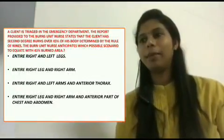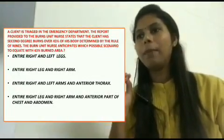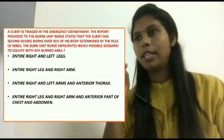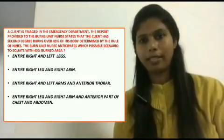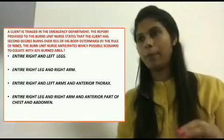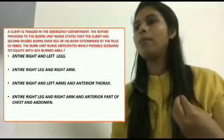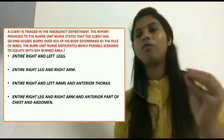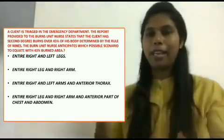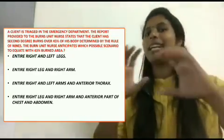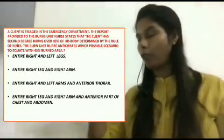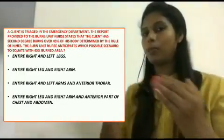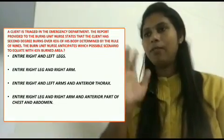Now let's see one more question. A client is triaged in the emergency department and the burns unit nurse states that the client has second-degree burns over 45 percent of his body, determined by the Rule of Nine. The nurse should anticipate which possible scenario equates to 45 percent of the burned body surface area. In this question, they give the percentage and you must match it to the correct body region combination from the options.